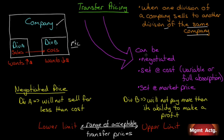We have three broad ways that transfer prices can be set. First, they can be negotiated — Division A and Division B get together, agree on a fair price. A lot of companies, on the other hand, set the transfer price at cost, so there's no need to negotiate. Whatever it costs Division A to produce, it's transferred over to Division B.